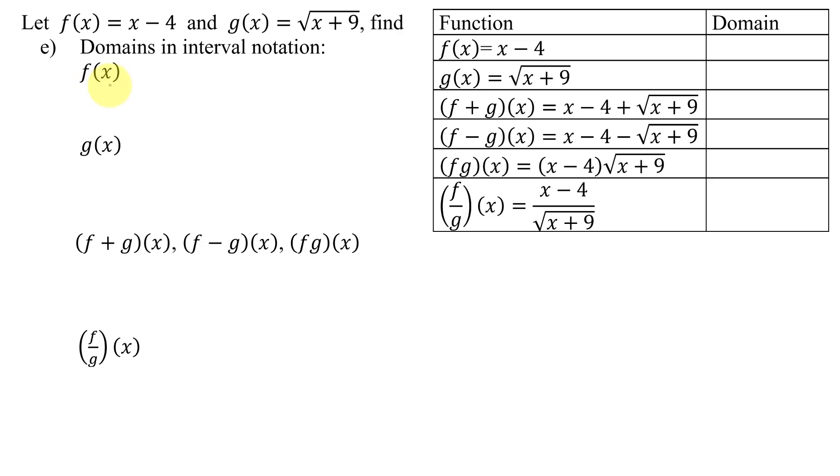So looking at f of x, which is x minus 4, a linear function, it's just a polynomial. And what's the domain of every single polynomial? That's easy. It's all real numbers. And we write that in interval notation as negative infinity to positive infinity.